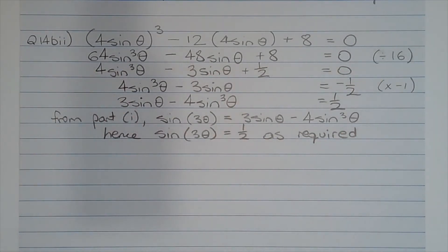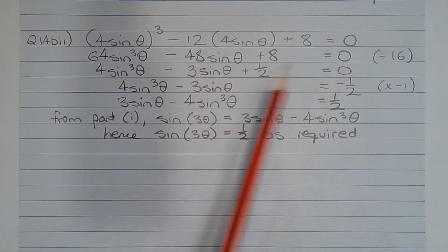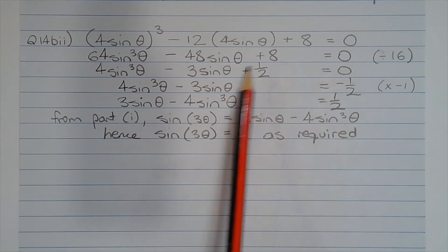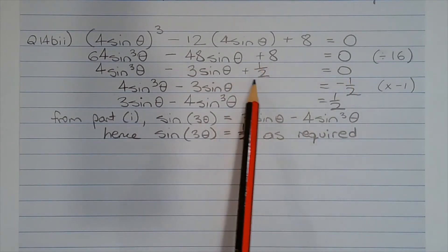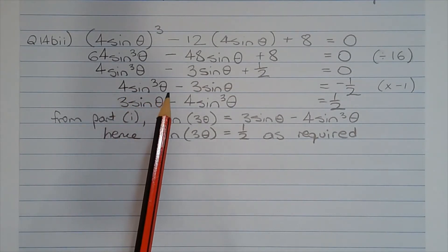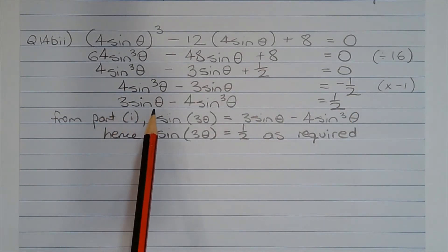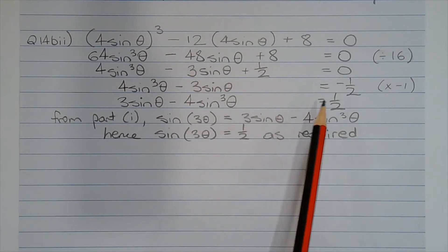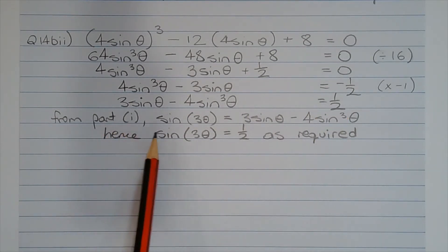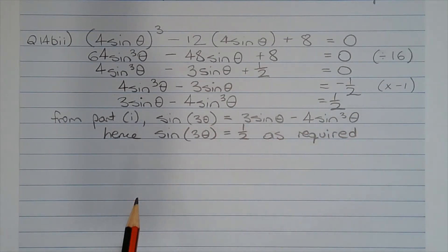Dividing all terms by 16, we get 4 sin cubed theta minus 3 sin theta plus one half equals 0. Subtracting one half from both sides, moving the positive half to the right-hand side so it becomes negative half, we get 4 sin cubed theta minus 3 sin theta equals negative one half. Multiplying all terms by negative 1, we get 3 sin theta minus 4 sin cubed theta equals one half. And from part 1, sin 3 theta is equal to 3 sin theta minus 4 sin cubed theta, hence sin 3 theta equals one half as required.